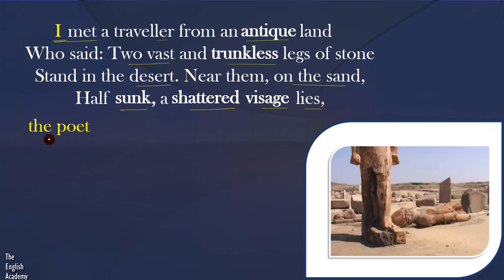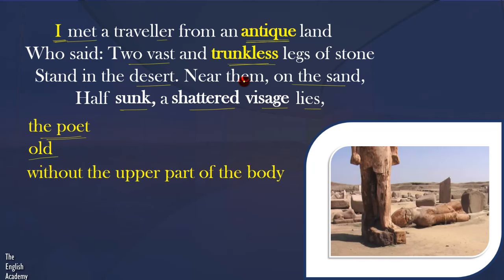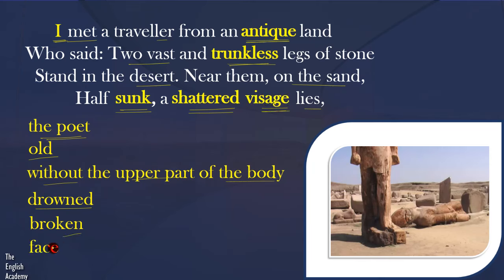The word 'I' here stands for the poet. The poet met a traveller from an antique land — antique means an old land. Trunkless means without the upper part of the body, so the upper part of the body is missing. Sunk means drowned. Shattered means broken. Visage means the face. The traveller saw two vast and trunkless legs made of stone — the remains of a statue — standing in the desert.